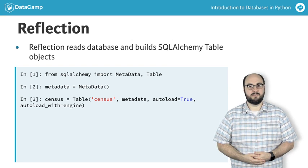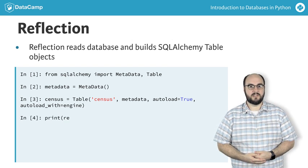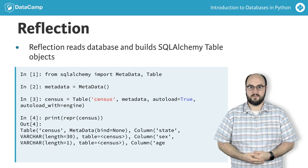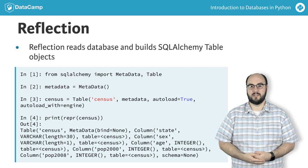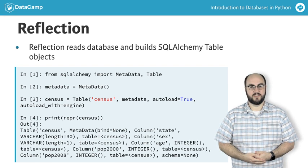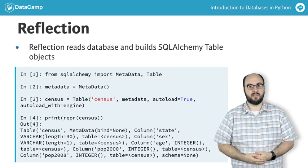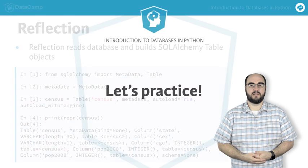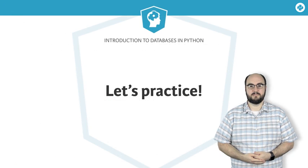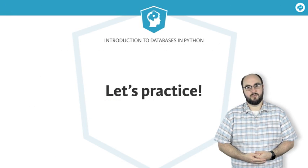Finally, we can use the function repr to view the details of our table that we stored as census. This allows us to see the names of the columns, such as the state and sex columns, along with their types, such as varchar and integer. This process of reflection may seem like a bit of overhead, but it will make understanding your databases and extracting information from them far easier downstream. Now it's your turn to practice writing connection strings, connecting to databases, and reflecting tables. Then we'll be back here writing our first SQL queries.